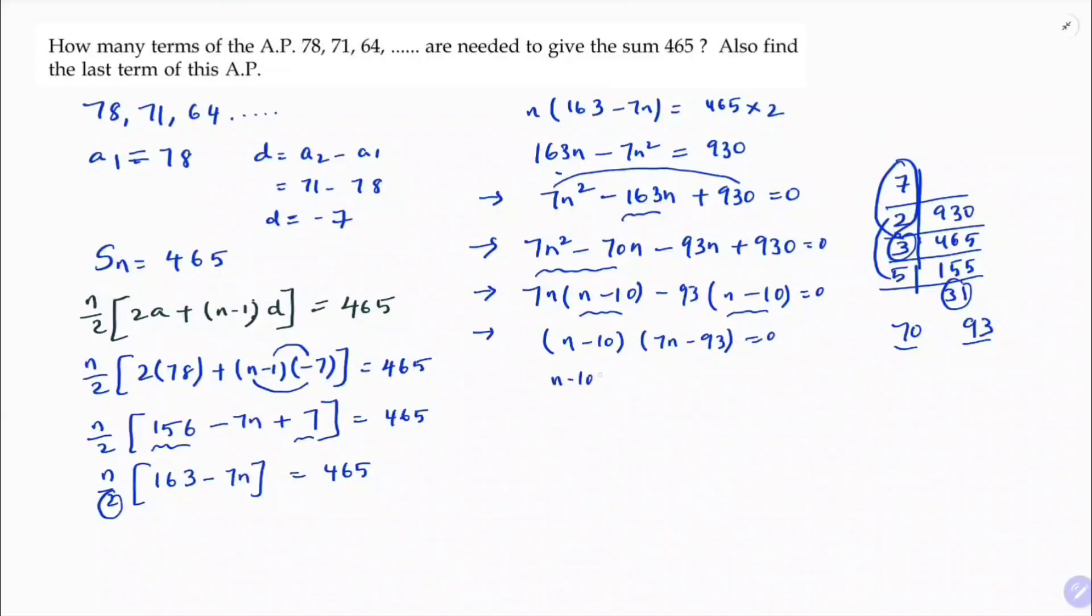So n minus 10 equals 0, 7n minus 93 equals 0. So n equals 10, 7n equals 93, n equals 93 by 7. So here this is not possible to cancel. Number of terms cannot be a fraction. So n equals 10.